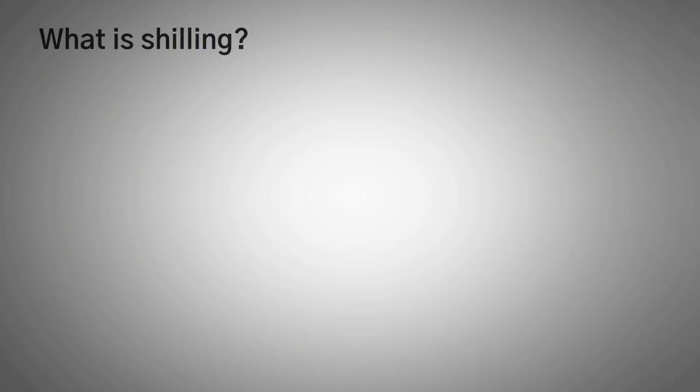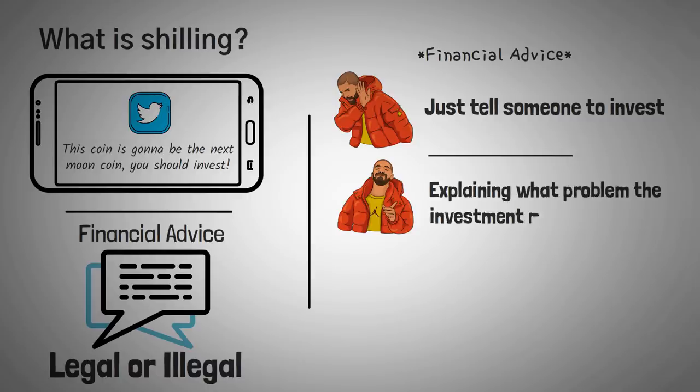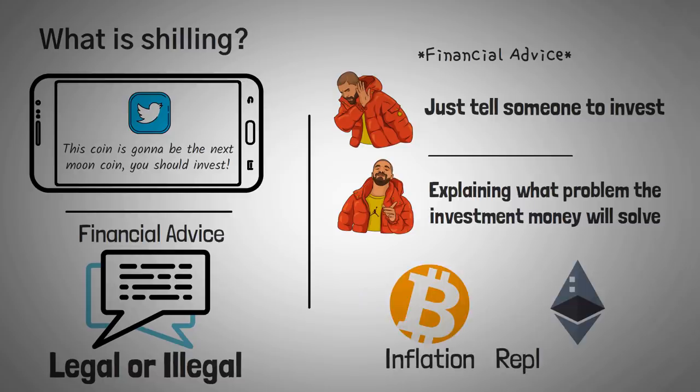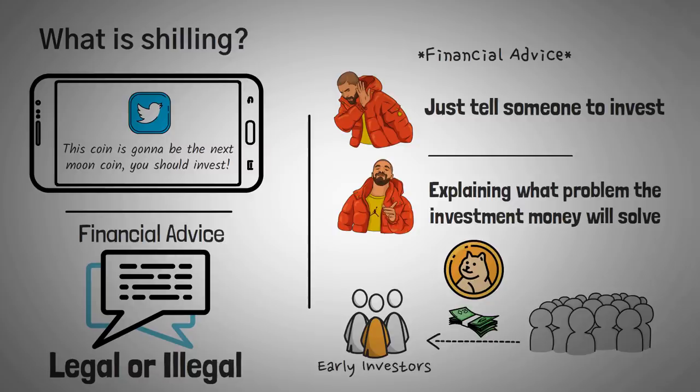Alright, this is basically shilling. Now shilling is a new term when it comes to cryptocurrencies, and it basically means someone spouting off, this coin's going to be the next moon coin you should invest. Basically giving you financial advice to buy an asset, which may or may not be illegal, but has a bad rap in the real world. If you have to tell someone to invest simply by just telling them to invest that they'll make money, and not by explaining what problem the investment money will solve, you need to rethink your investment. What problem is Dogecoin solving? Bitcoin solves inflation. Ethereum is replacing a bank. What problem does Dogecoin solve? Because taking money from a few hundred thousand investors and giving that money to a few hundred people who invested early enough to be lucky, it's not really solving a problem. The creator started the coin as a joke to poke fun at Bitcoin.